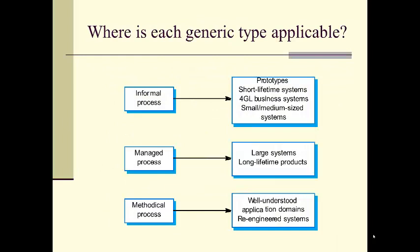Where is each generic type applicable? Informal processes are great for prototypes, short lifetime systems, fourth-generation language business systems — things you snap together with Excel and some Visual Basic tools — and small to medium sized systems. These are like agile methods; they work well for prototypes and small systems but may not scale to large systems or long lifetime products. Methodological processes are for well-understood application domains and re-engineered systems.